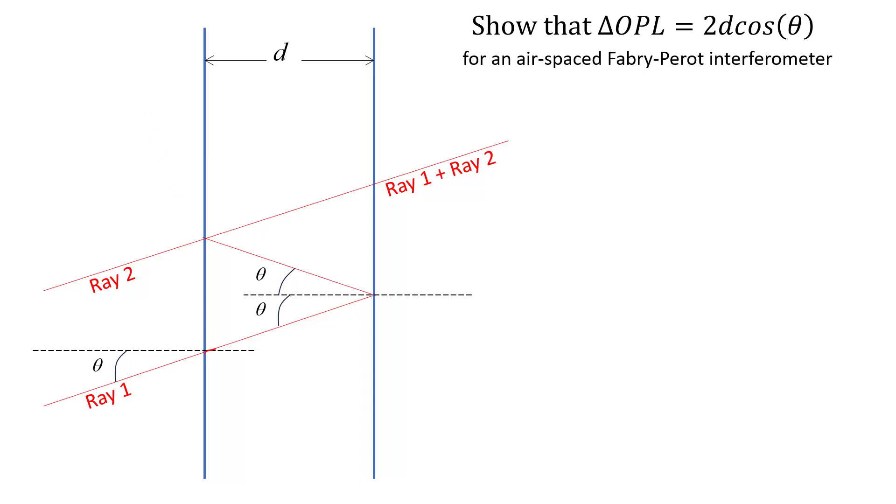On first glance, it might seem to be this. But that's not it. That would be nice because it's just d over cosine theta twice. And so 2d divided by cosine theta would seem to be the difference in optical path length.